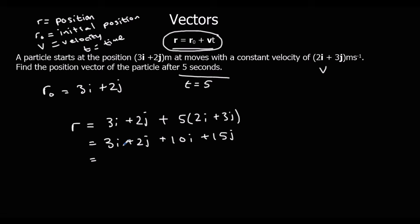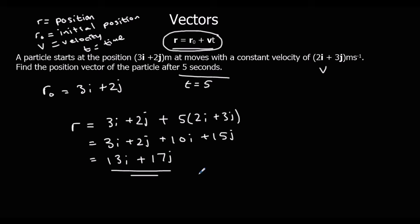So we've got 13i now. It started at 3i, it's moved 10i, so now it's at 13i. And for the j's, it started at 2j, it's moved 15, so we're now at 17. So the position is 13i plus 17j.